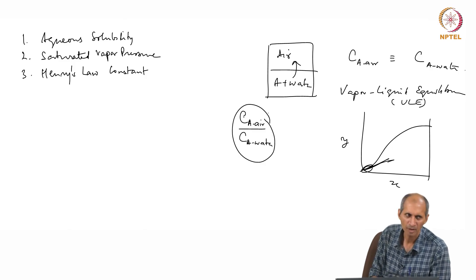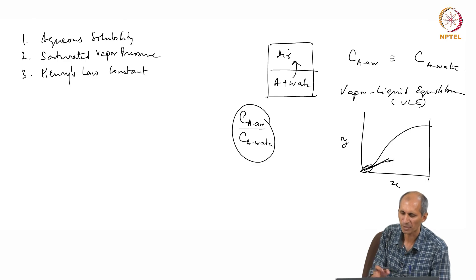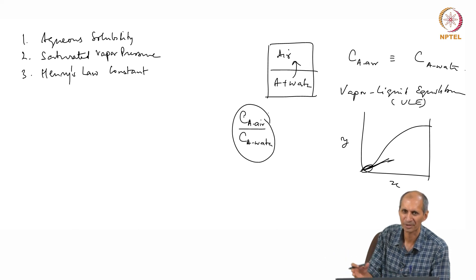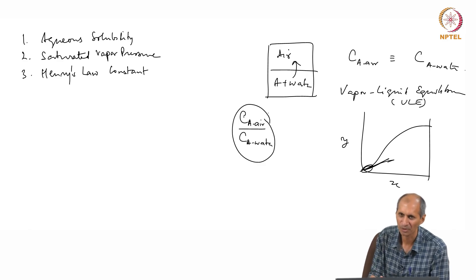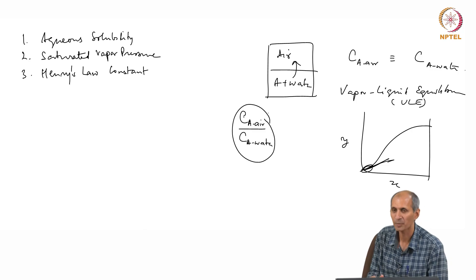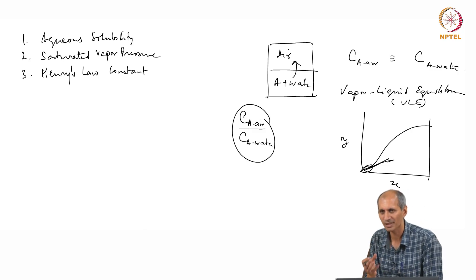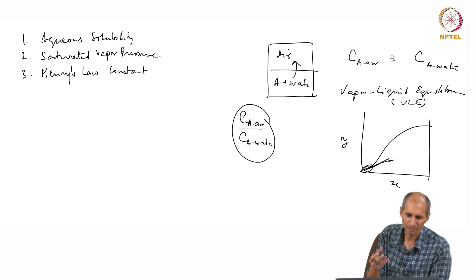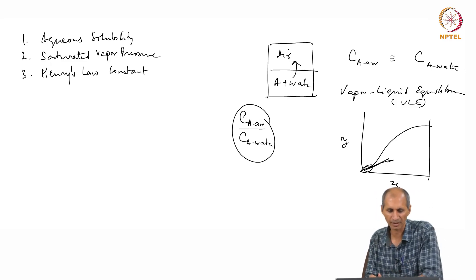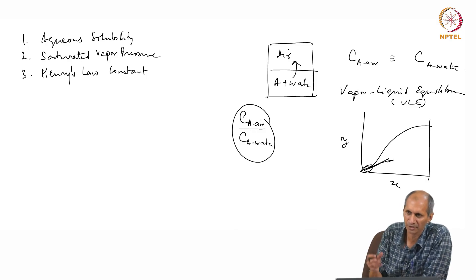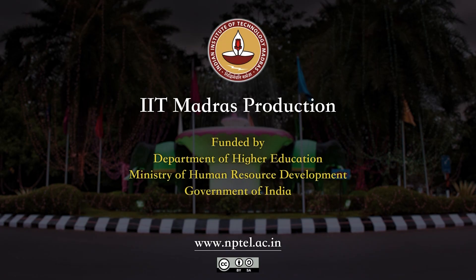In some applications, the Henry's law is reversed — concentration in water goes on top. You have to watch out for this in literature, as people do it for convenience. For example, if Henry's law constant is 0.0001, you might reverse it and say it is 1000 with water over air. This happens in cases where partitioning is favorable in water over air, such as in sulfur dioxide absorption applications.